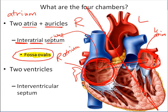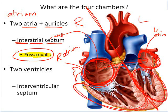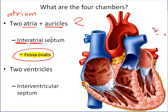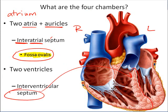Immediately inferior to the two atria are the two ventricles — the right ventricle and the left ventricle. The right and left ventricles are separated from one another by a wall or septum, just like we saw with the atria. That septum is called the interventricular septum — inter meaning between, ventricular referring to ventricles — so this is the wall between the two ventricles.